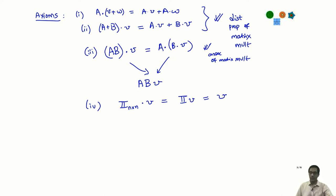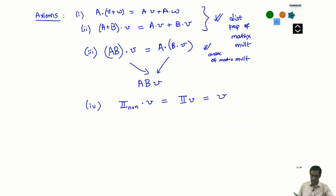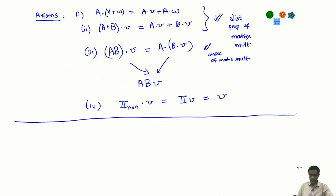This space V of n×1 column vectors is a left module over the ring M_n(K). We can tweak this example just a little bit to construct a right module. Here is an exercise for you.